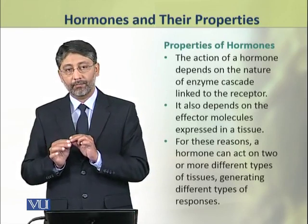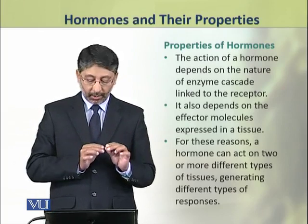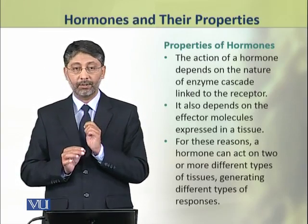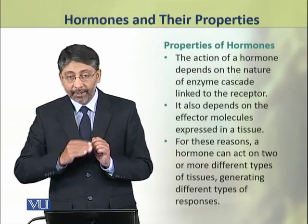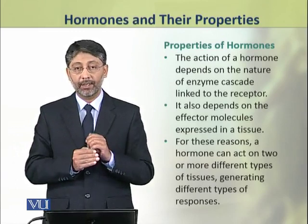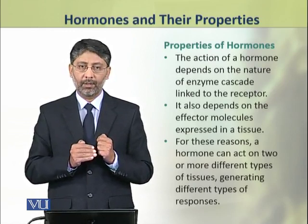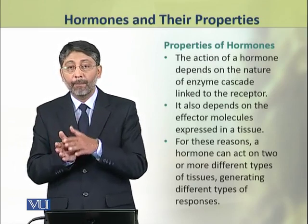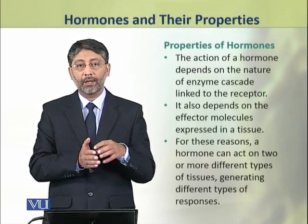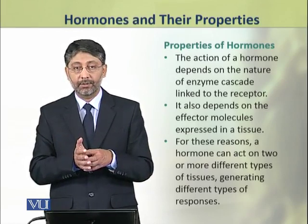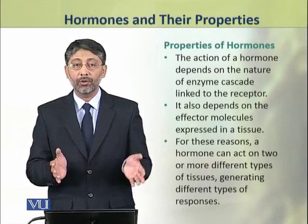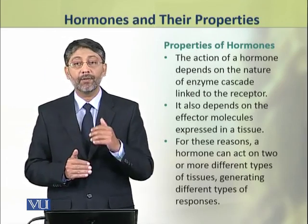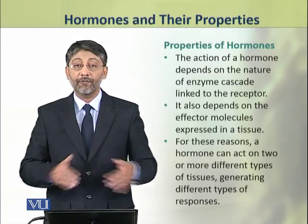The action of the hormone depends on the nature of the enzyme cascade which is linked to the receptor. If the receptor is present but the enzyme cascade is the same, a hormone can produce multiple actions. If a hormone acts on two different types of tissues with different receptors, it can produce different types of enzyme cascades. This is why some hormones act on more than one tissue but produce different effects.